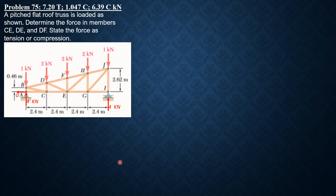We section this panel and consider forces to the left of section 1-1. We name the cut members FDF, FDE, and FCE. We can determine FCE directly by summing up moments about D so that FDF and FDE are not involved in the moment equation.